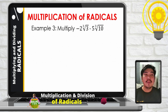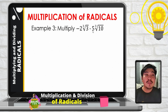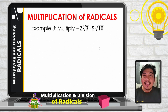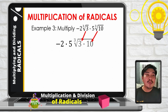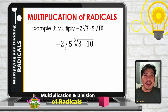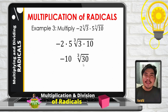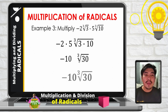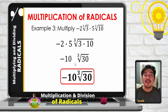Let us have example number 3. Multiply negative cube root of 3 times 5 cube root of 10. Same process — let us multiply the coefficients negative 1 and 5. Since they have the same index 3, we can join 3 times 10 in one radical symbol. Negative 1 times 5 gives us negative 5, and cube root of 3 times 10 is cube root of 30. Since 30 is not a perfect cube, the final answer is negative 5 cube root of 30.